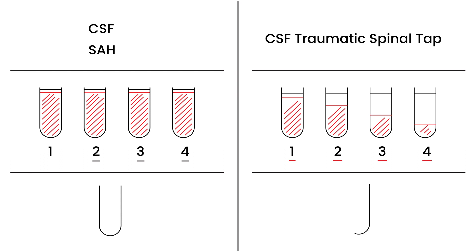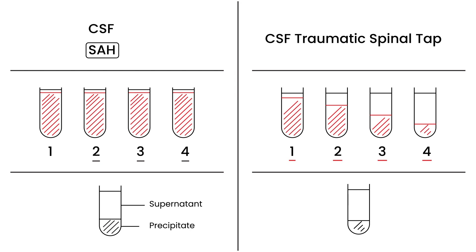Another way to differentiate the two is by centrifuging. You take a sample and spin it, which separates the liquid from the precipitate. The bottom part is the precipitate, and the top fluid portion is called the supernatant. In CSF from a subarachnoid hemorrhage, this supernatant will be yellow. It will not be yellow if it's a traumatic spinal tap.